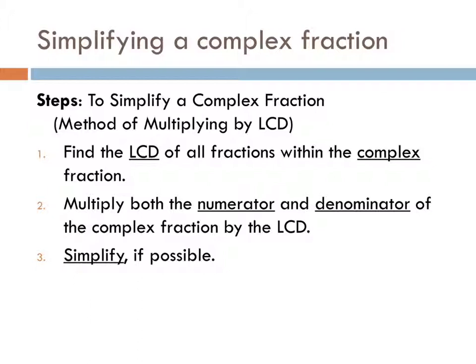This is the three-step process for using the LCD to simplify complex fractions. Step one: find the LCD — the LCD of all the little fractions. If you look at that example, you're looking at all those little fractions on top and bottom and finding a single LCD for all of them combined. Once you have that, you're going to multiply every piece of that problem by the LCD, which will cancel out pretty much all the denominators, leaving you with a single large fraction instead of a bunch of little fractions.